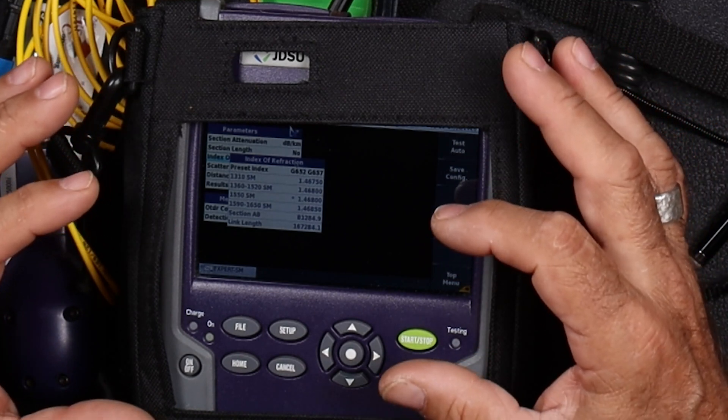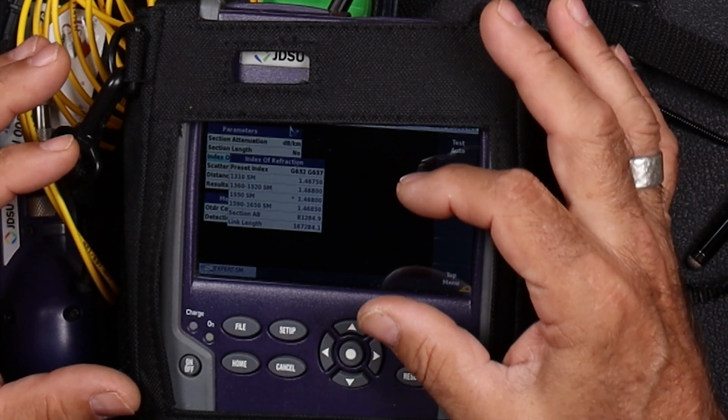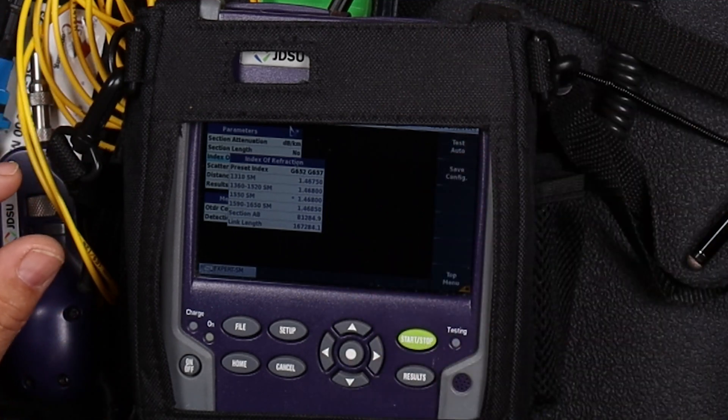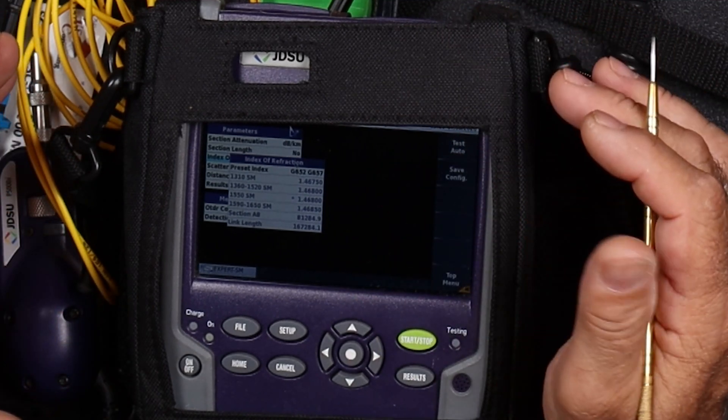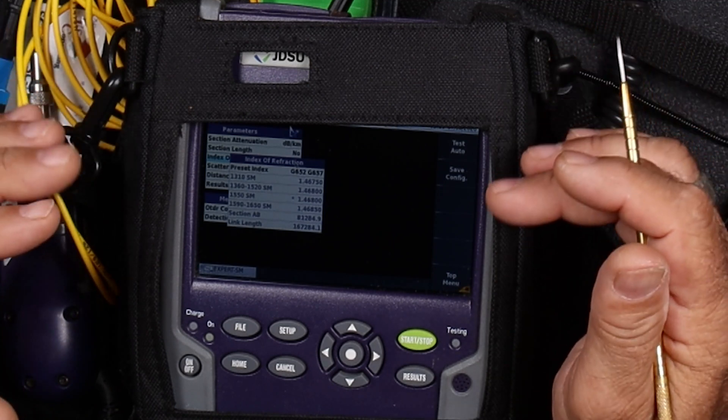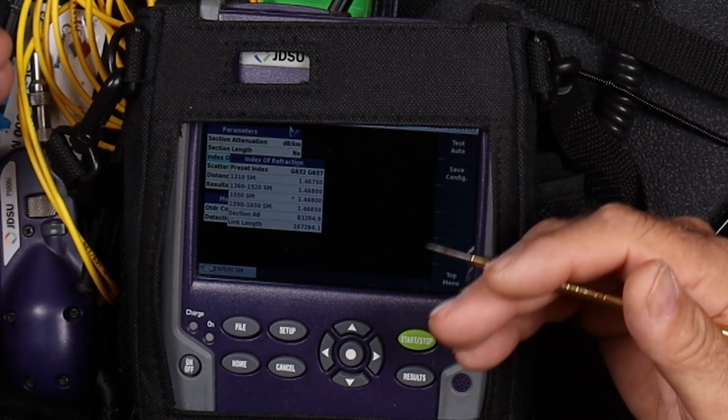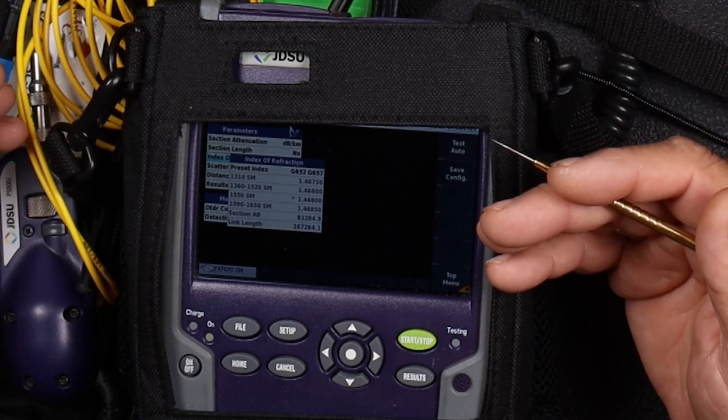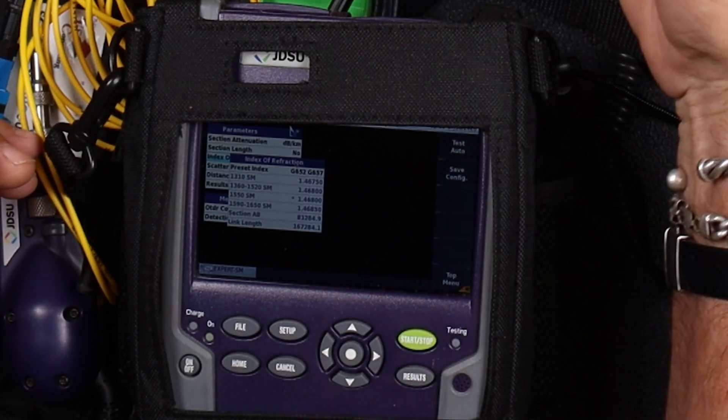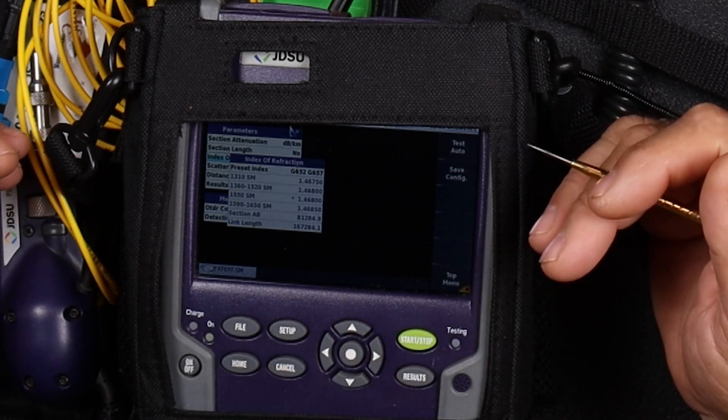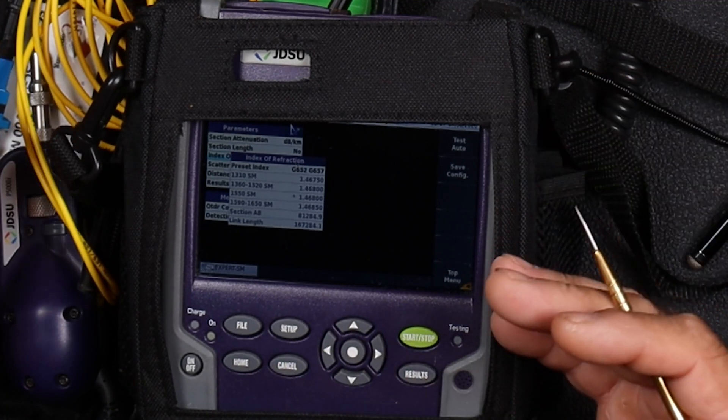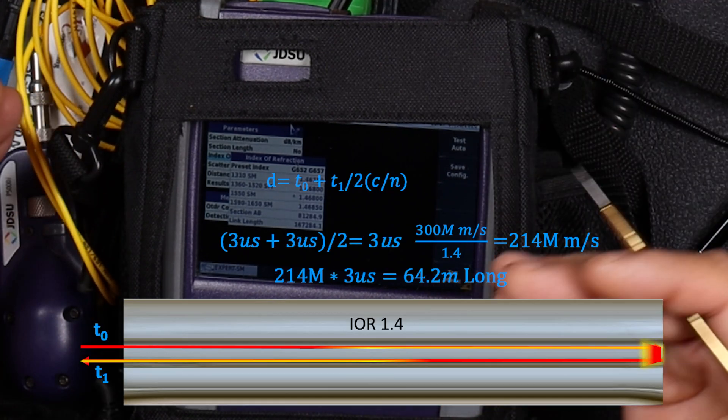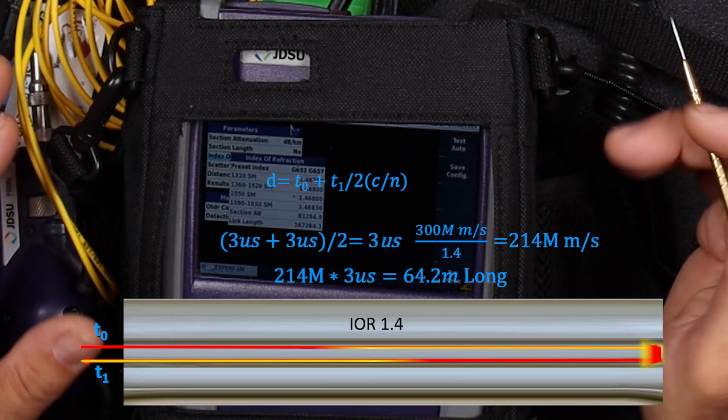The OTDR uses this time domain. It knows how fast light moves in the fiber because we're telling it. What it does is it actually uses a time. Knowing that it's moving that fast, it can calculate out when it sends out a pulse. And by the time it gets that pulse back, how long some number of microseconds or picoseconds to get to the end and get back, divide by two, and you get a distance calculation.